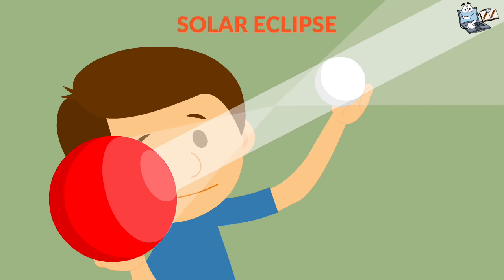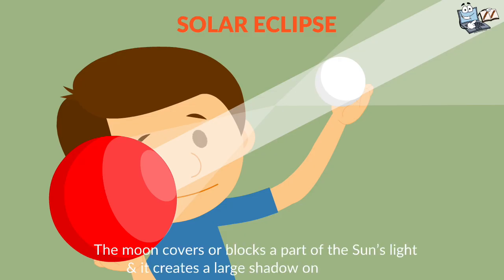Now it's easy to remember that in solar eclipse, the moon covers or blocks a part of the sun's light and it creates a large shadow on the Earth.